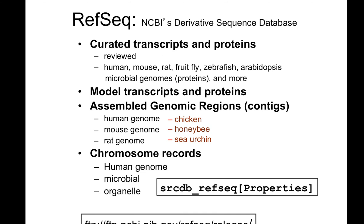As I mentioned, the reference sequence is the NCBI derivative sequence database — that is curated transcripts and proteins. They review it and characterize it, especially for model transcripts and proteins. Remember, we talked about model organisms. They can use assembled genomic regions and can organize it by chromosomes, so you can search it by chromosomes. This could be very important for your sequencing records.